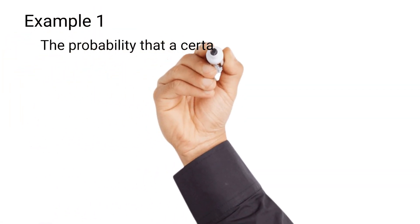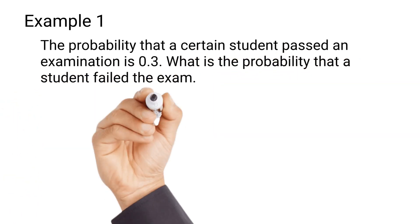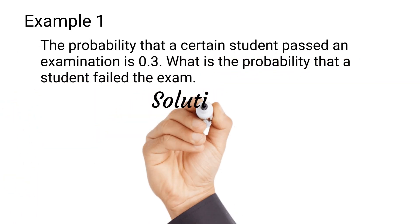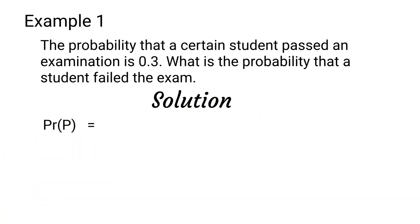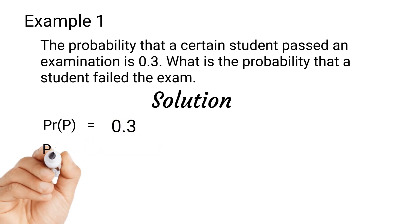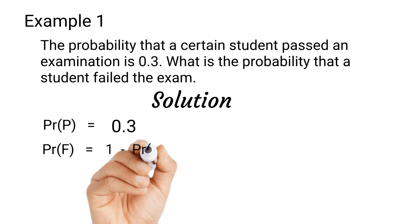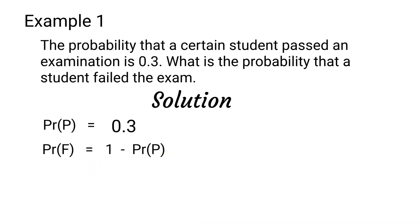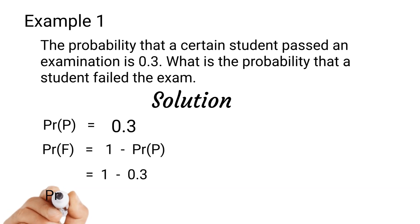Example one: the probability that a student passed an examination is 0.3. What is the probability that the student failed the exam? Solution: probability of passing p is given as 0.3. The probability that the student failed will be 1 minus the probability that he passed, which is 1 minus 0.3, giving us a probability of failure of 0.7.